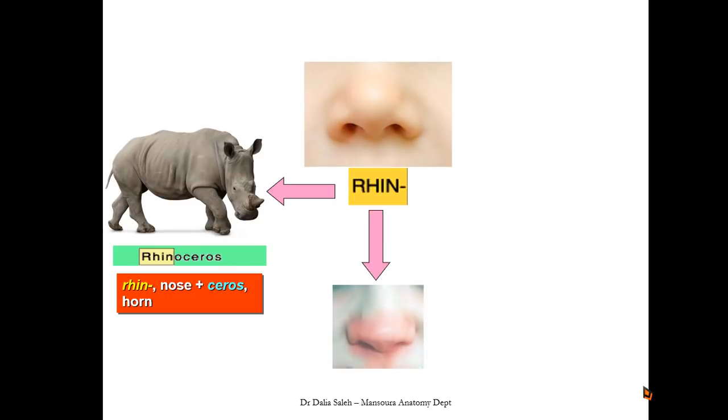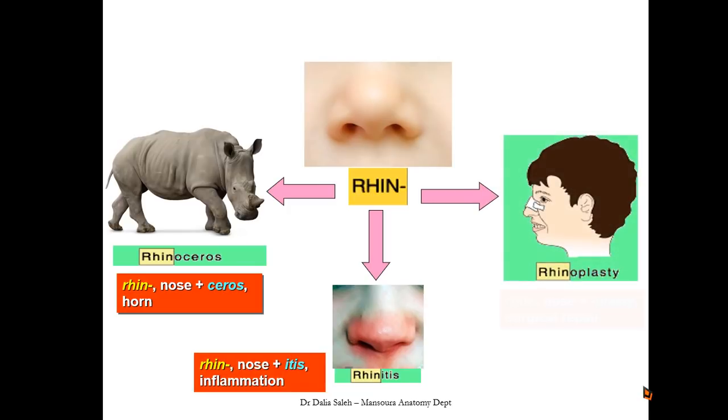Another example, if we add the suffix itis to the end of the rhin, we end up with a medical term called rhinitis or inflammation of the nose. If you add the suffix plasty, we will end up with what is called rhinoplasty or surgical repair of the nose, and so on.